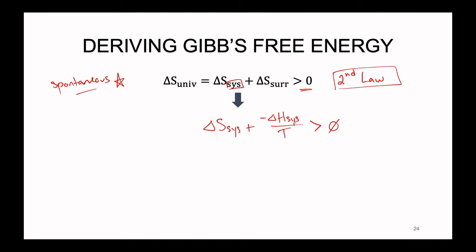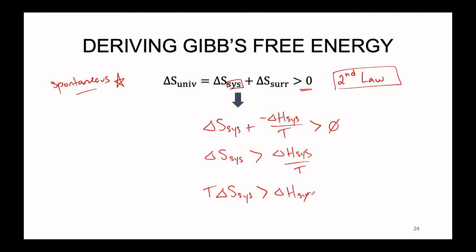It can be messy to work with fractions, so our next goal is to get all of our variables in the same line with no denominators. We're going to add the enthalpy of the system divided by T to the right-hand side, giving us: the entropy of the system has to be greater than the enthalpy of the system divided by T for a spontaneous reaction. Then we multiply T up to the left-hand side, so T times the entropy of the system has to be greater than the enthalpy of the system.